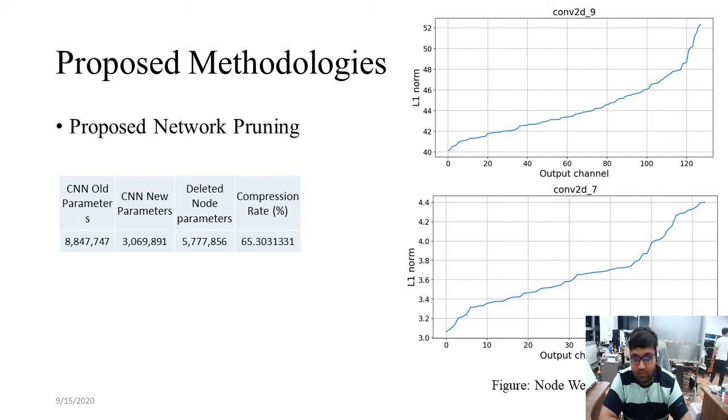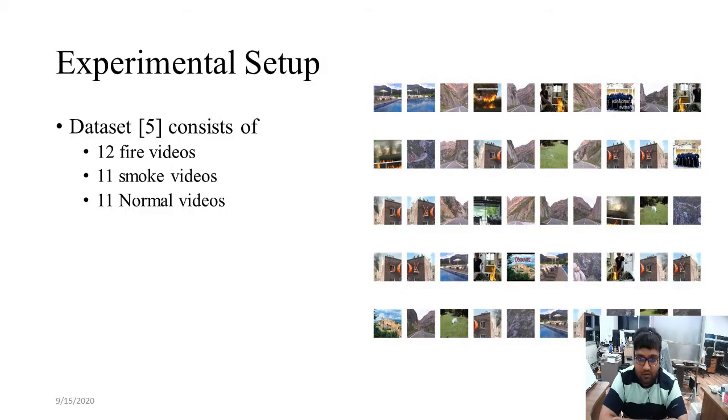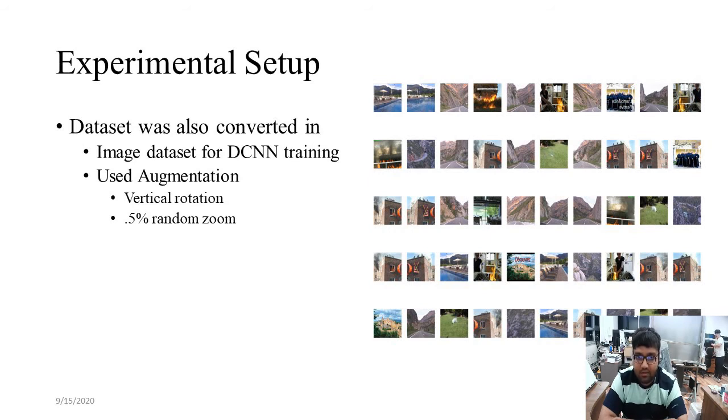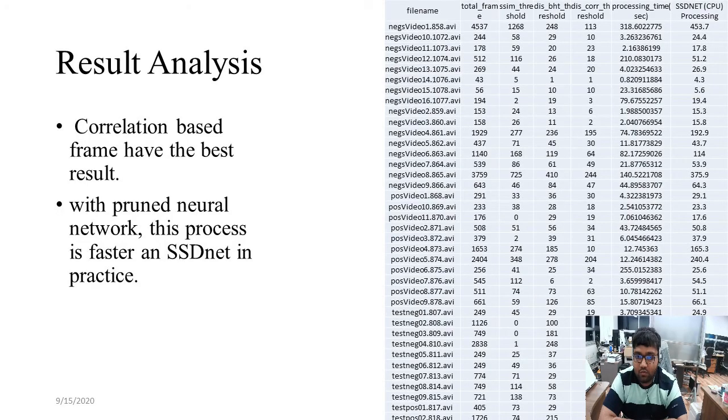In the experiment, we used 12 fire videos and 11 smoke videos plus normal videos from open source datasets. We used data augmentation with vertical rotation as some datasets can be rotated at any time, and 0.5% random zoom. The correlation-based system gives the best result. The pruned network can be run very fast. Here are some results we compared with SSD net running on a CPU with our system and processing frame system screen.